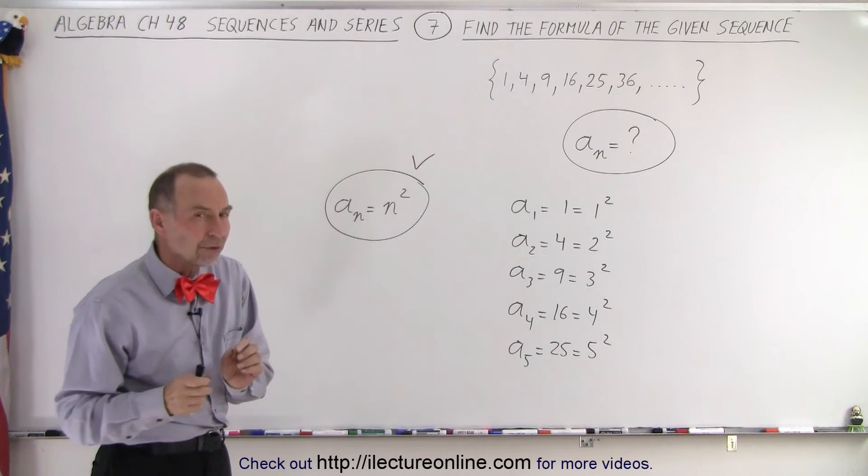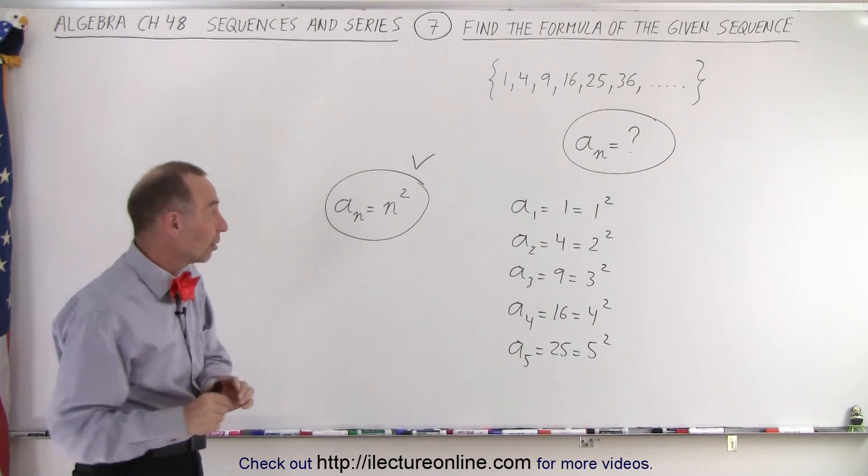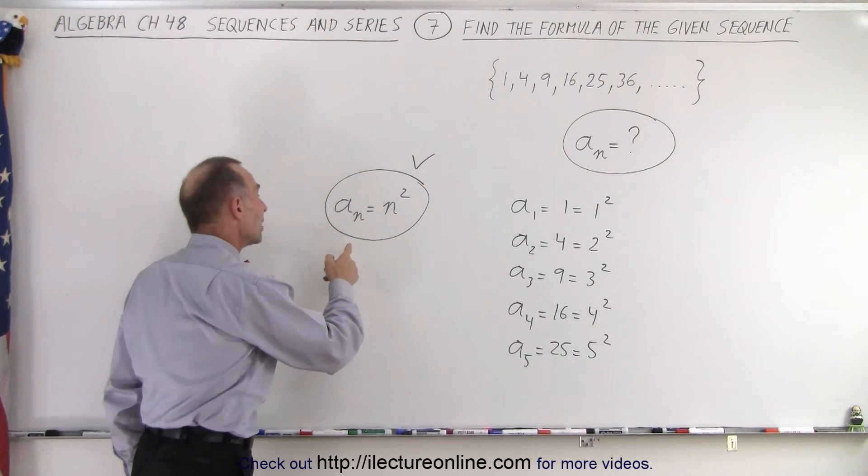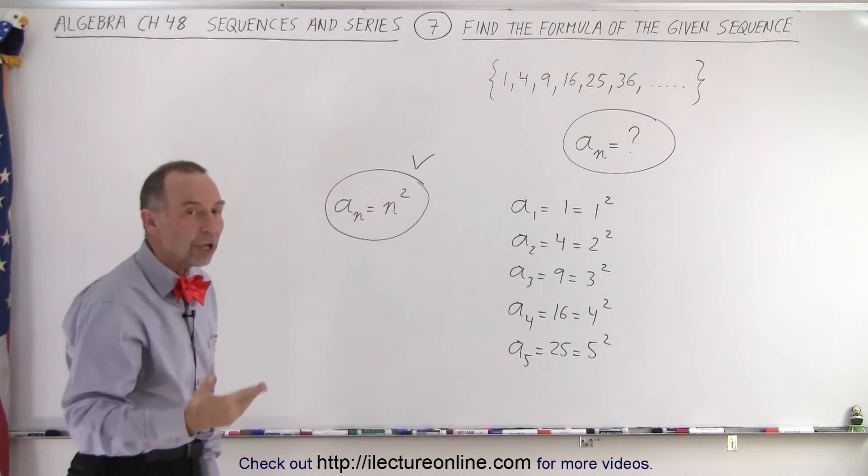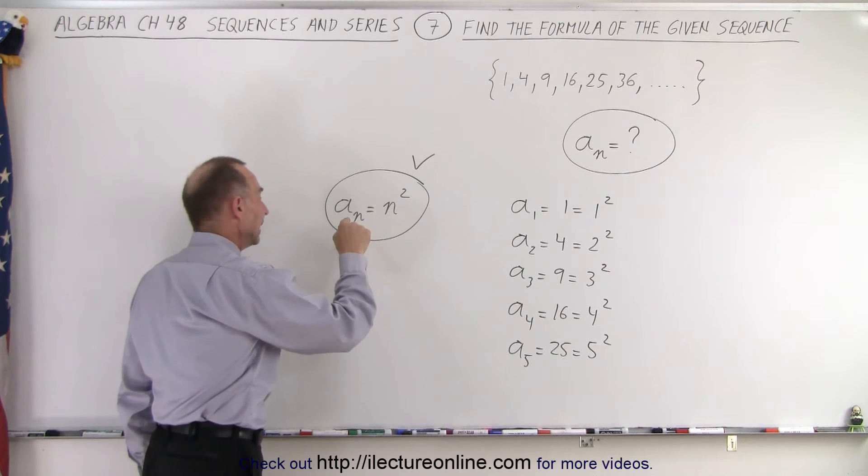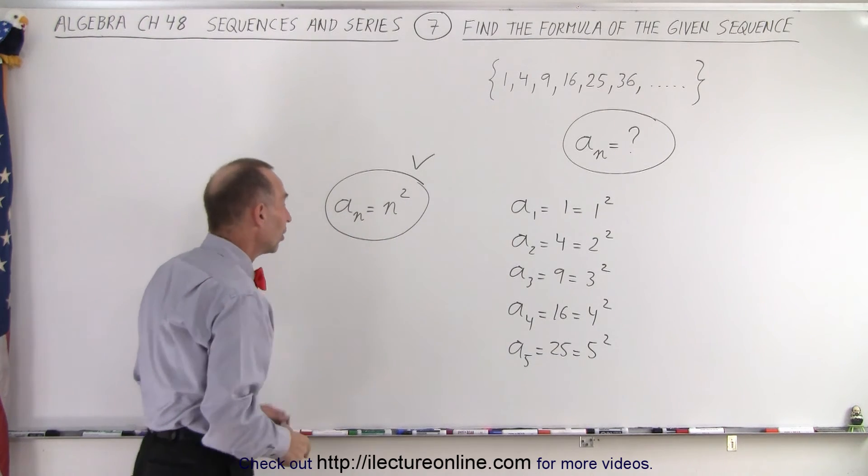In other words, the formula of the sequence gives us a shorthand method to identify every term in the sequence by some simple equation. a sub n equals n squared, plug in any n, and you get the result.